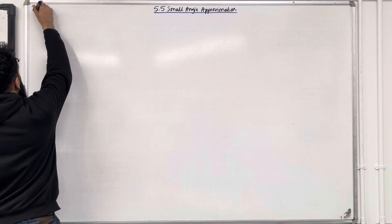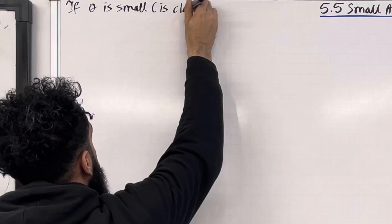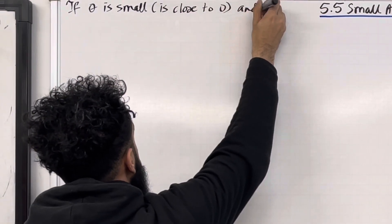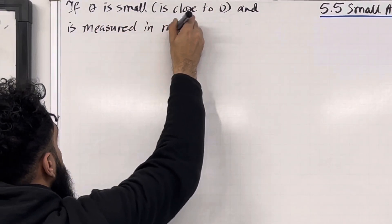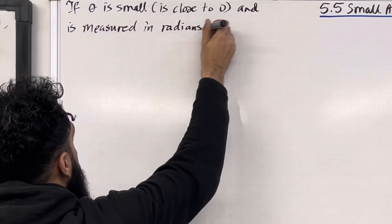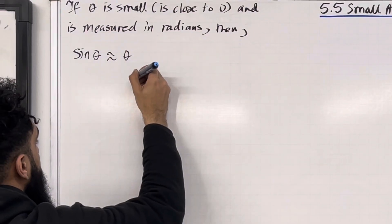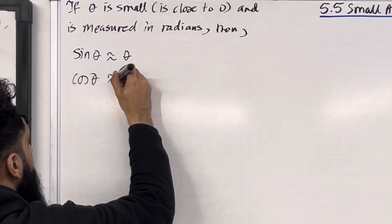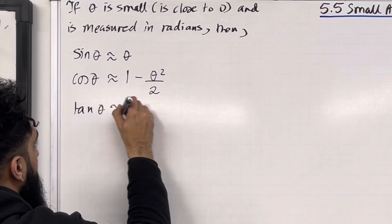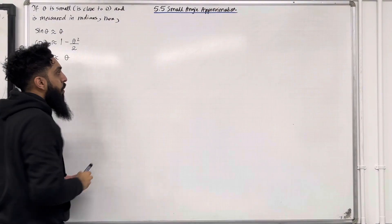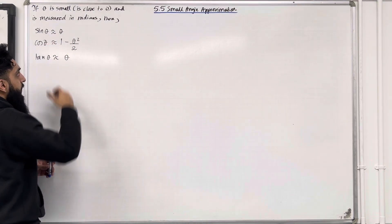If theta is small, meaning close to zero and measured in radians, then sine theta is approximately theta, cos theta is approximately 1 minus theta squared over 2, and tan theta is approximately theta. These are the small angle approximations you need to know for the examination, and they are given in the formula booklet.